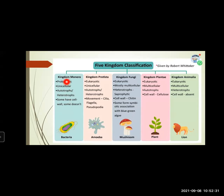The second kingdom was Protista. In this, the organisms are eukaryotic. They are unicellular. They may be autotrophs or heterotrophs. Their movement is with the help of cilia, flagella, and pseudopodia. Amoeba is an example in kingdom Protista.